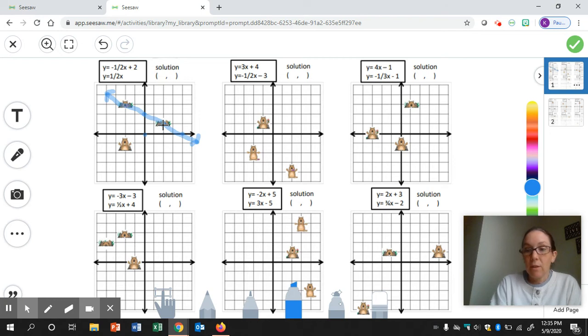Since I still have room, I'm going to do a third point. Up one, right two. Once you have three points there, go ahead and draw your line through the three points as straight as you can.